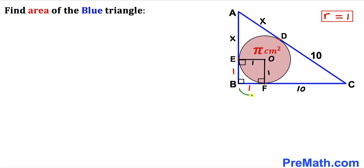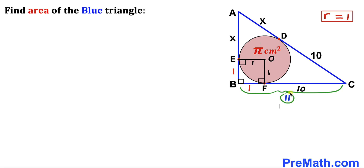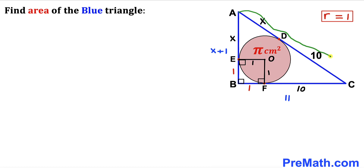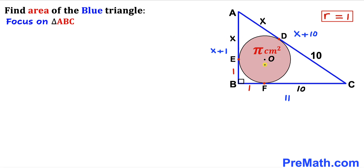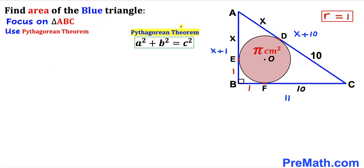BC = BF + FC = 1 + 10 = 11 centimeters. AB = BE + EA = 1 + x = x + 1. And hypotenuse AC = AD + DC = x + 10. Now applying the Pythagorean theorem to right triangle ABC with legs 11 and x+1, and hypotenuse x+10: (x+1)² + 11² = (x+10)².